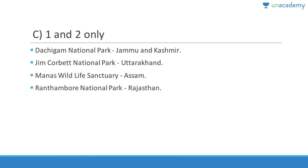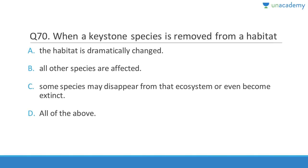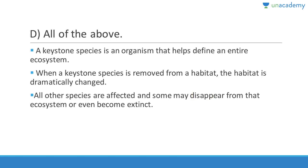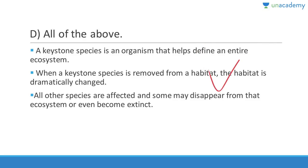Question seventy: When a keystone species is removed from a habitat, the habitat is dramatically changed, all other species are affected, and some species may disappear or even become extinct. All of these are absolutely correct. Answer is D, all of the above. A keystone species is an organism that helps define an entire ecosystem. When it is removed, the habitat dramatically changes and some species can become extinct. Thank you for watching this lesson.